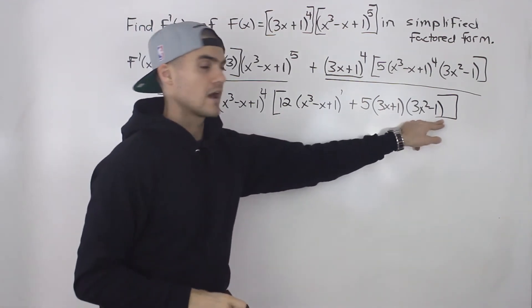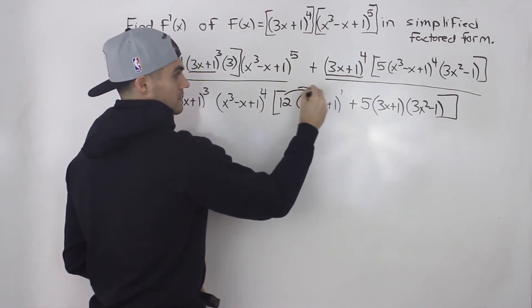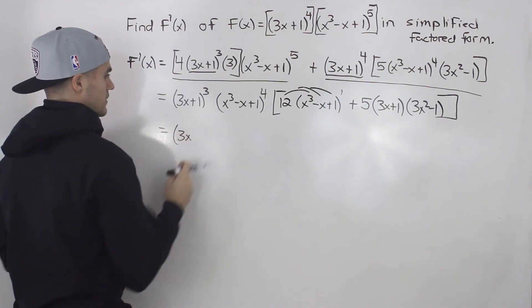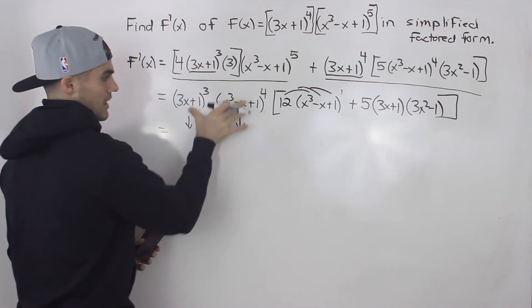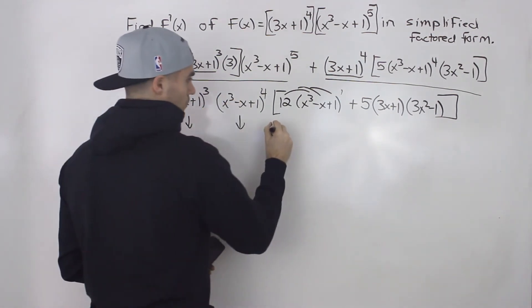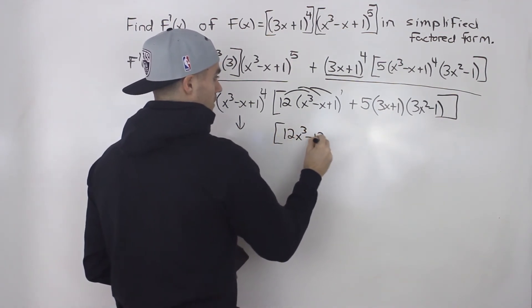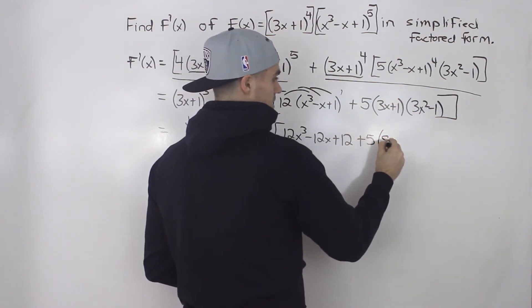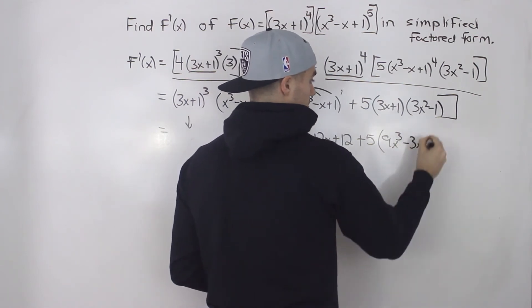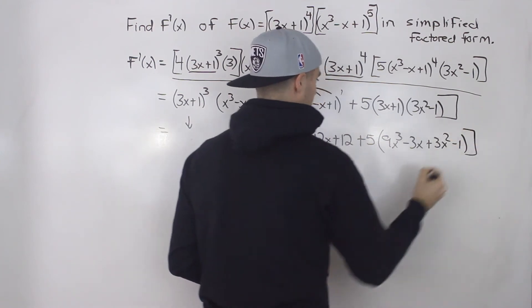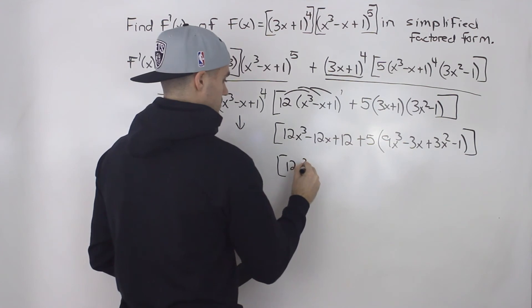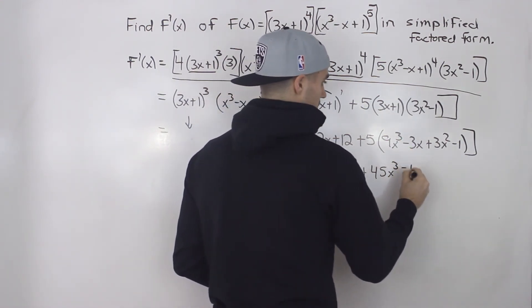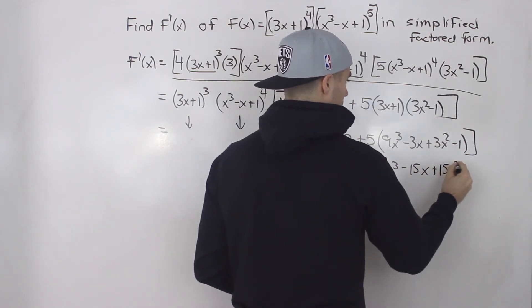All we have to do now is simplify the remaining bracket by expanding. Bringing the 12 in and FOILing the two brackets, then factoring the 5 in: we get 12x cubed minus 12x plus 12. Then FOILing (3x plus 1)(3x squared minus 1) gives 9x cubed minus 3x plus 3x squared minus 1. Multiplying by 5: 45x cubed minus 15x plus 15x squared minus 5.